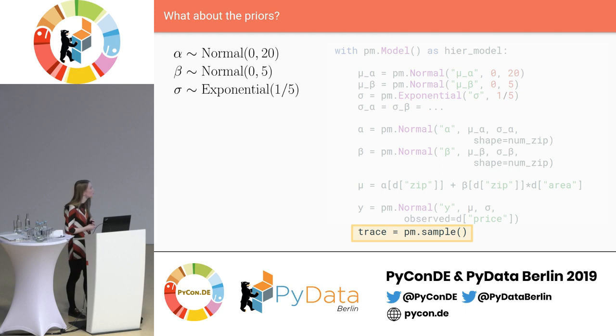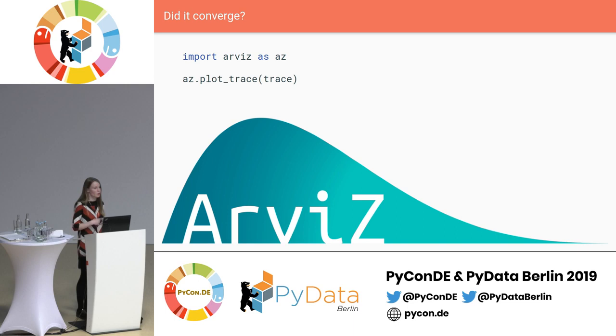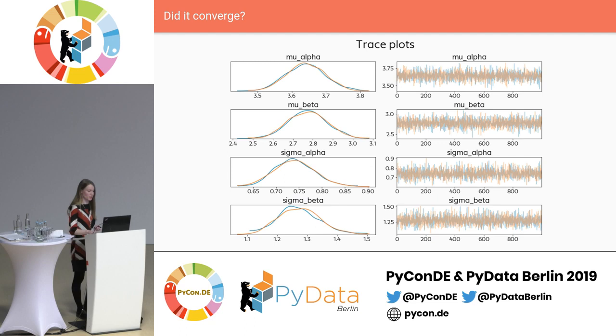Now that we've decided on priors, we can sample from our model. It didn't take too long — less than two minutes — so at least for this data it was quite fast. Before we can use the model, we have to check if it actually converged. To check convergence, I'm using the package ArviZ, which provides many convenient functions to plot the model and compute convergence statistics.